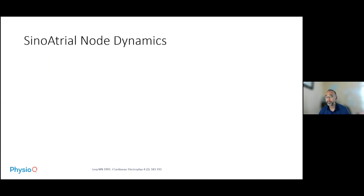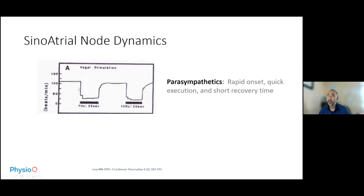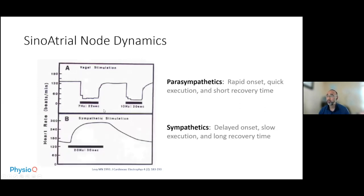A lot of this happens at the sinoatrial node — the SA node. At the SA node, the vagal nerve of the parasympathetic nervous system operates much quicker. It has a rapid onset with quick execution and short recovery time. You can see that when the vagal nerve is stimulated, the heart rate quickly drops down, and the moment you stop, it quickly recovers to its baseline rate. For the sympathetic system, it has a delayed onset with slow execution and a long recovery time. When you stimulate the sympathetic nerve directly, there is a lag — a slow rise in heart rate — and then a slow recovery as you turn off the stimulation. These dynamics explain why heart rate variability shows different things at different frequencies.